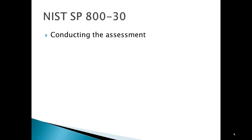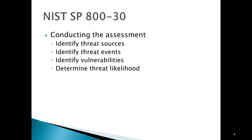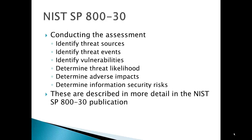In conducting the assessment, you identify your threat sources, identify potential threat events related to those sources, identify vulnerabilities that can be exploited through a threat event, determine the likelihood of the threat based on knowledge of the nature of the threat and the vulnerabilities, and then determine what the impacts would be if the threat were realized. Given that, you can define the information security risks involved. This is described in more detail in NIST SP 800-30 and is something we'll be doing in this class as part of our ongoing assignment.